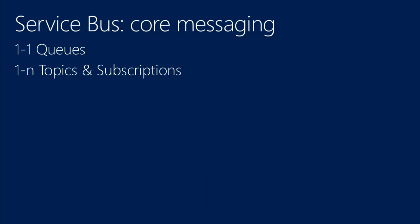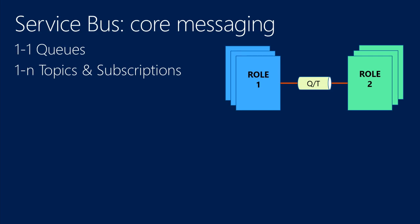From a core messaging perspective, you already know we have queues, topics, and subscriptions. Queues are for one-on-one communication, and when you need one-to-many, you use topics and subscriptions. Generally, when you're connecting two roles — say a web role, a worker role, or an on-premise service with a client — putting a queue or topic in between gives you a good amount of scale-out. You can independently scale both your nodes, separate out your web workload and your worker workload, with queues in the middle helping you scale both independently.